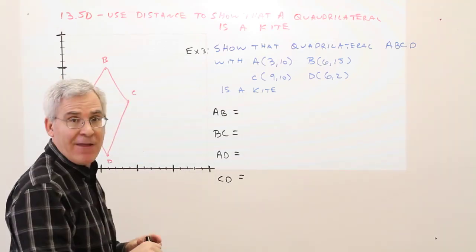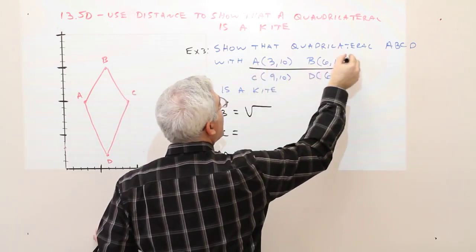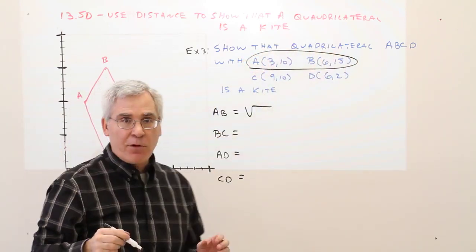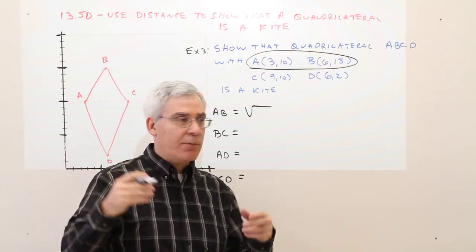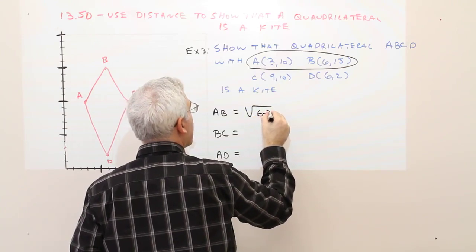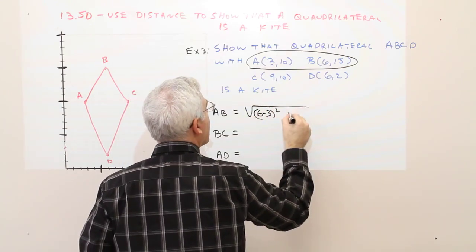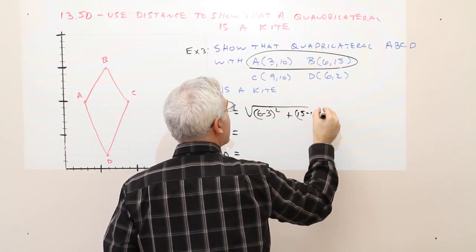So for AB, I'll find that with the distance formula. So I'm using these two coordinates right here. The distance formula is you subtract the x's, square them, subtract the y values, square them. So it'll be 6 minus 3 squared plus 15 minus 10 squared.